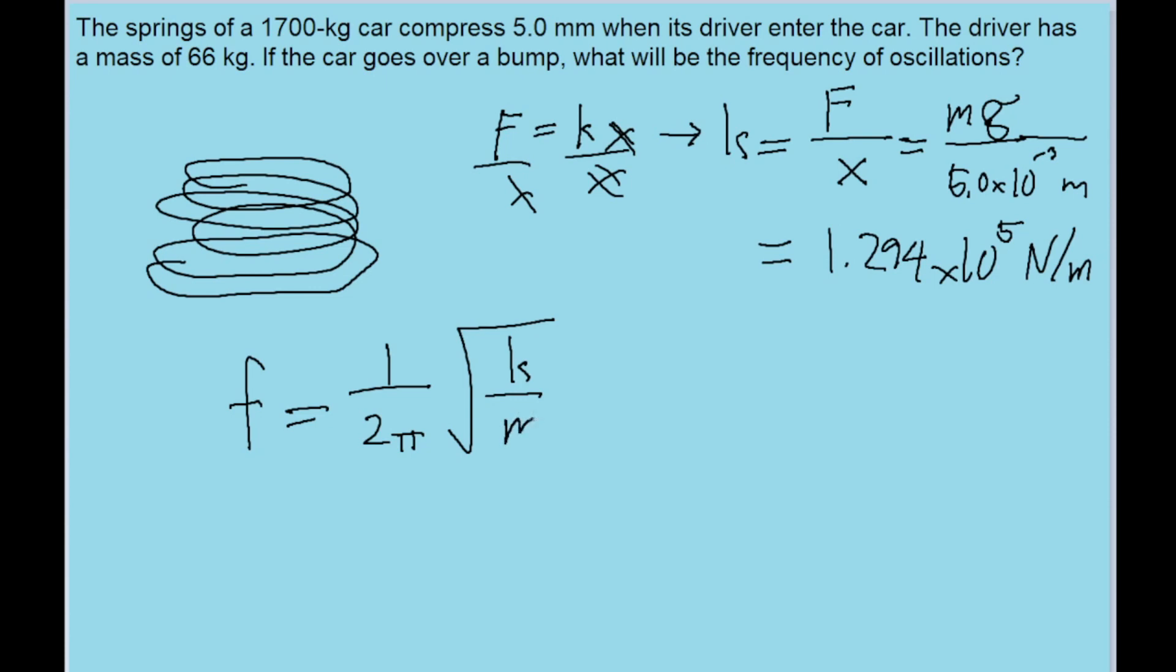Divided by m, which in this case is going to be the full mass of both the car and the driver. So 1,700 kilograms plus 66 kilograms is what we're going to use for this m. I'm going to use a capital M.